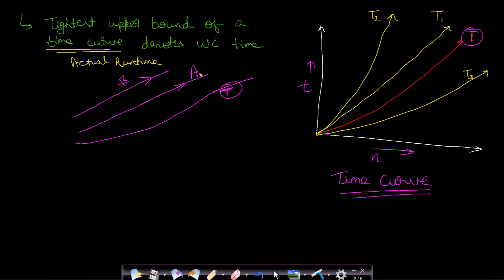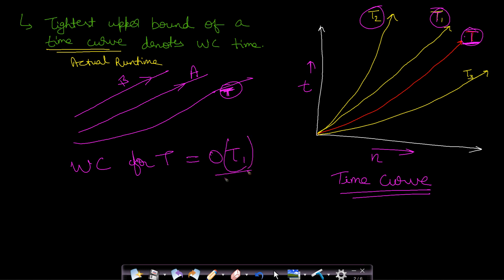But what is the tightest upper bound? It means the upper bound that is closest to t. You can see that t1 and t2 are both upper bounds of curve t, but t1 is closer to t than t2. Therefore, the worst-case time for t will be O(t1). You can also say it is O(t2), but that is not correct because t1 is much closer to t compared to t2. Therefore the worst-case time of your program will be O(t1).